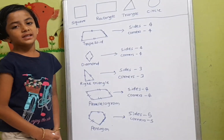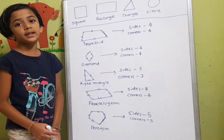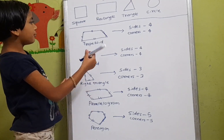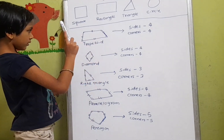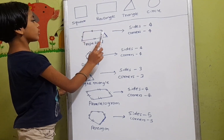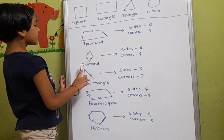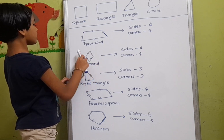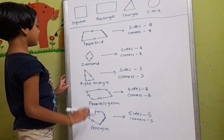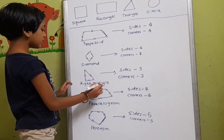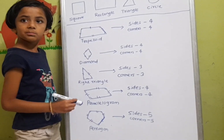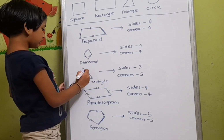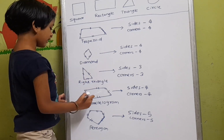Here are some other examples. Trapezoid — a trapezoid has four sides and four corners. Diamond — a diamond has four corners and four sides. Right triangle — a right triangle has three sides and three corners.